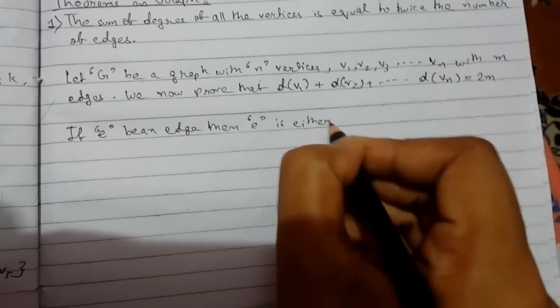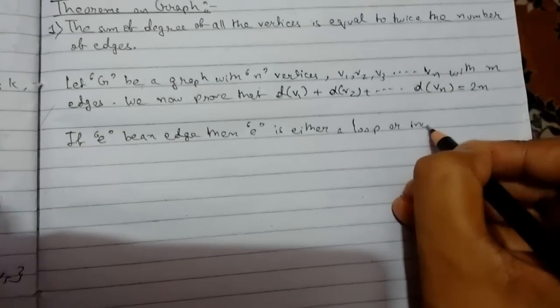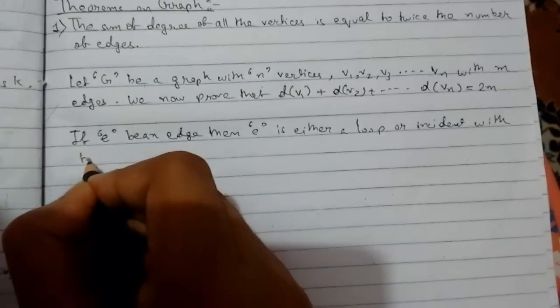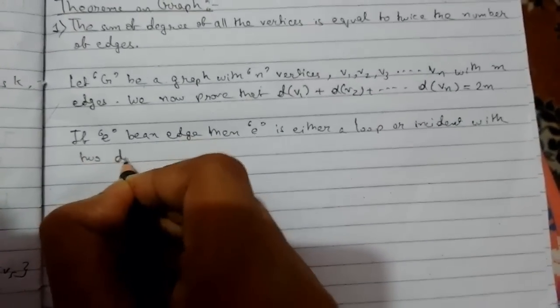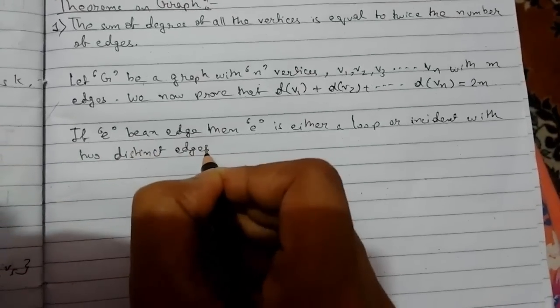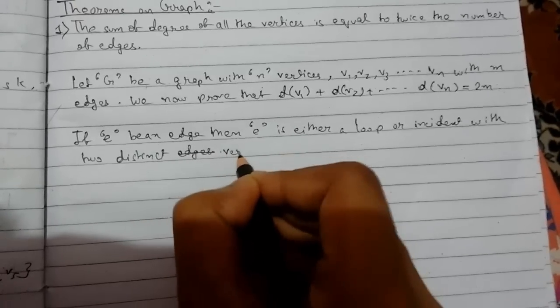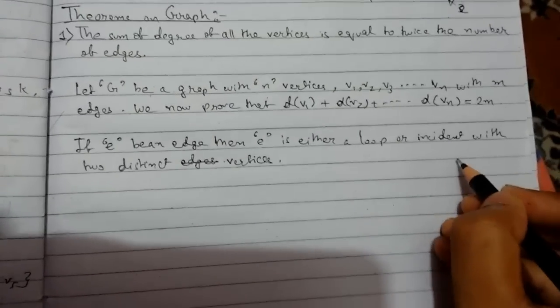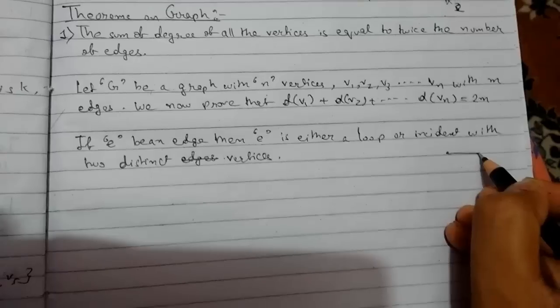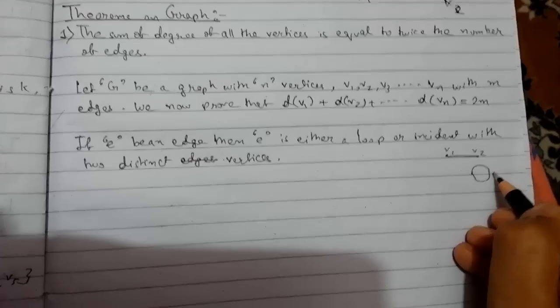This is simple. An edge can either be incident to two vertices, suppose v1 and v2, or an edge can be a loop. So in both cases...